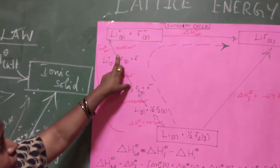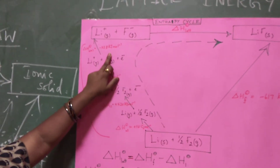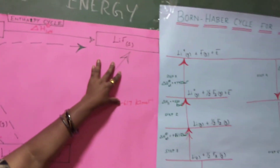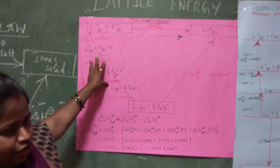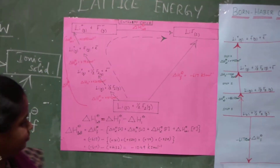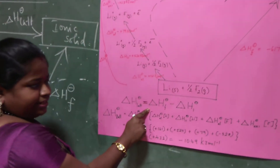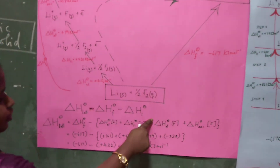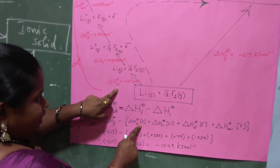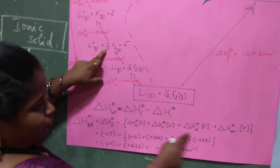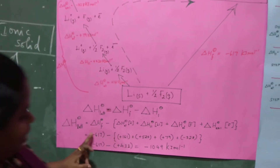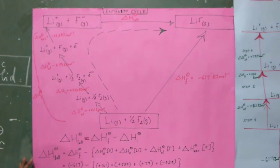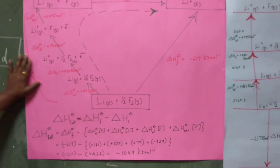Electron affinity is an exothermic reaction because fluorine releases some energy when it gains an electron and becomes an ion. Once you get the gaseous ions, they form the ionic solid. When you get the ionic solid from the gaseous ions, it releases energy — that energy is called lattice energy. To calculate lattice energy, you take the enthalpy of formation and subtract the sum of: atomization of lithium, ionization of lithium, atomization of fluorine, and electron affinity of fluorine.